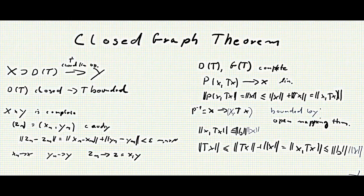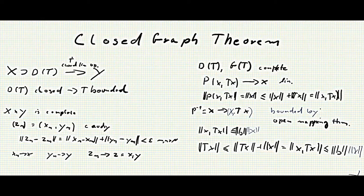And by the open mapping theorem, we know that the inverse of a bounded linear operator between Banach spaces is itself bounded. So p inverse is bounded. Let's say the norm of (x, Tx) is smaller than some b for every x. This is just what it means that the inverse of p is bounded. And we can now use this fact to show that our operator T is in fact bounded.